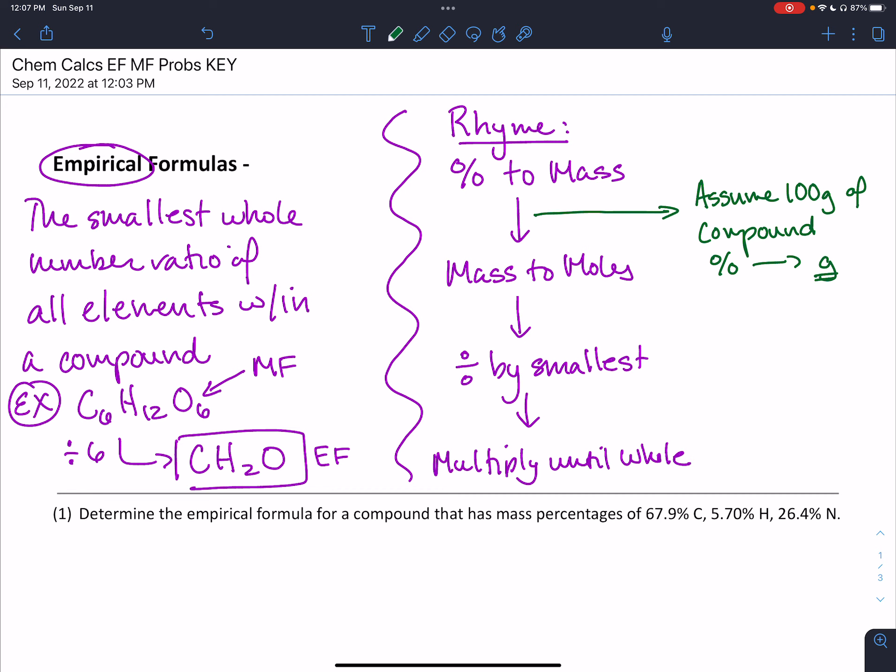Once you know the gram values of each element, you can convert to moles. For that, we need the molar mass, as we saw in the last unit, which means you'll need your periodic table. Make sure you have that handy along with your calculator. One thing to keep in mind: these problems are very touchy when it comes to decimals. I tell my students to hold four decimal places once they convert into moles.